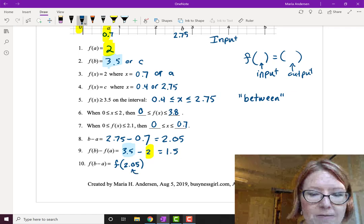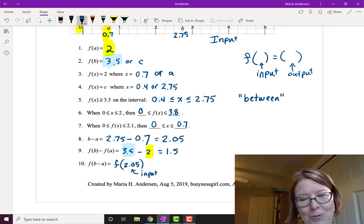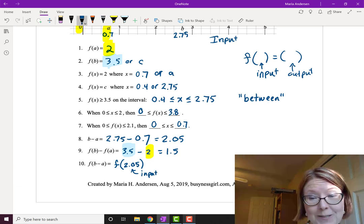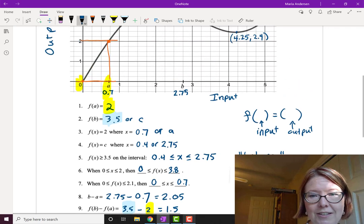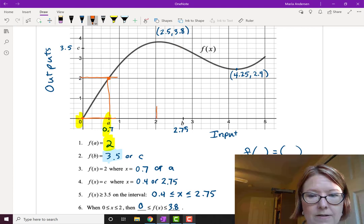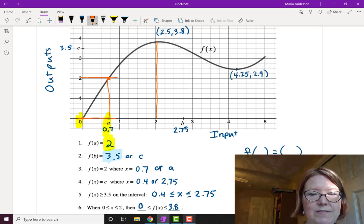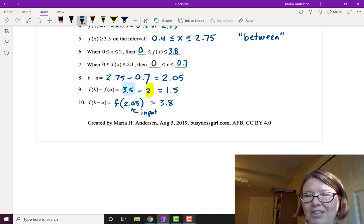Remember 2.05 is the input and f of 2.05 is the output. So let's look on the graph for an input of 2.05. That's about here. The output looks like it is somewhere in the neighborhood of 3. A little over 3.75. So let's say 3.8. All right.